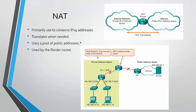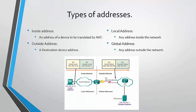What R2 does as a NAT router is that it translates public addresses into private ones and private addresses into public ones. There are several types of addresses. The first one is the inside address, which is an address of a device that is going to be translated by NAT. An outside address is a destination device address, commonly referred to as a public address. A local address is any address inside the network, and a global address is any address outside the network.